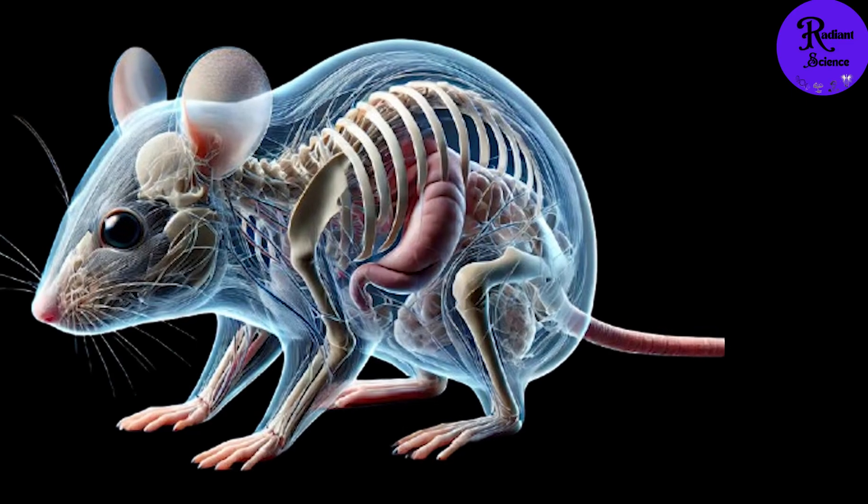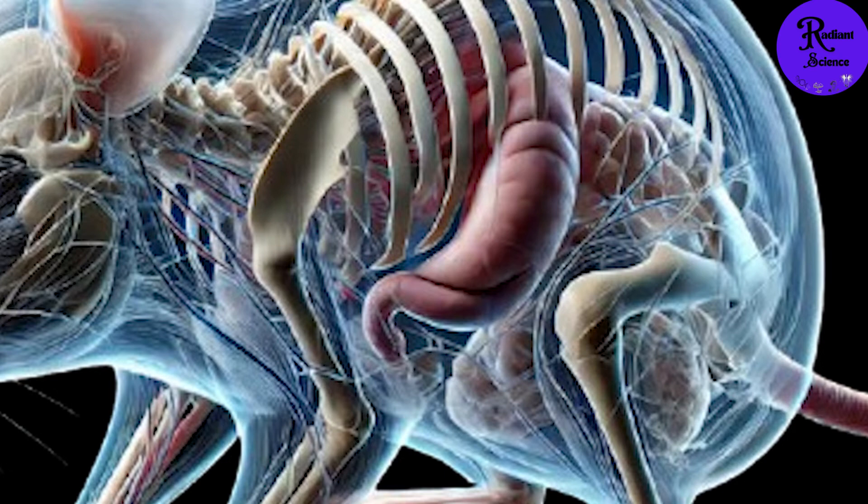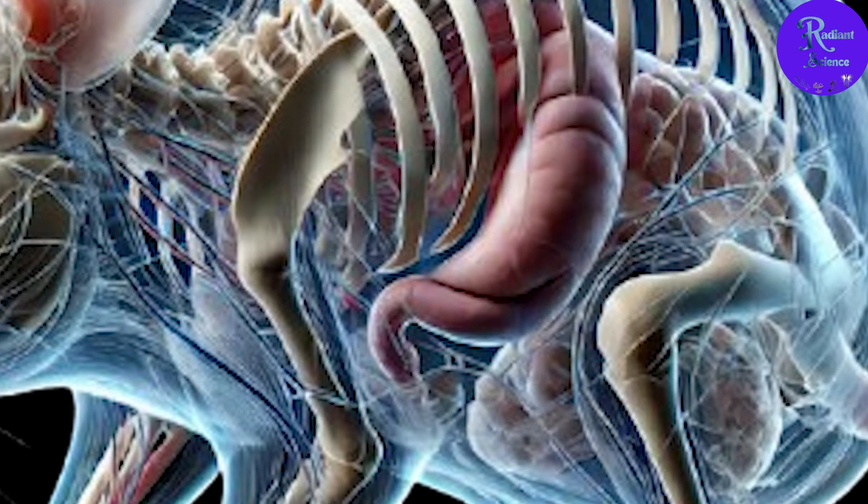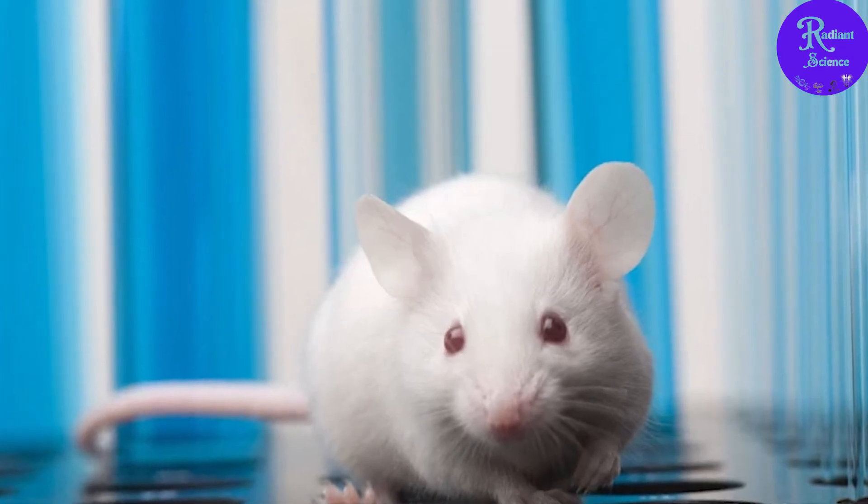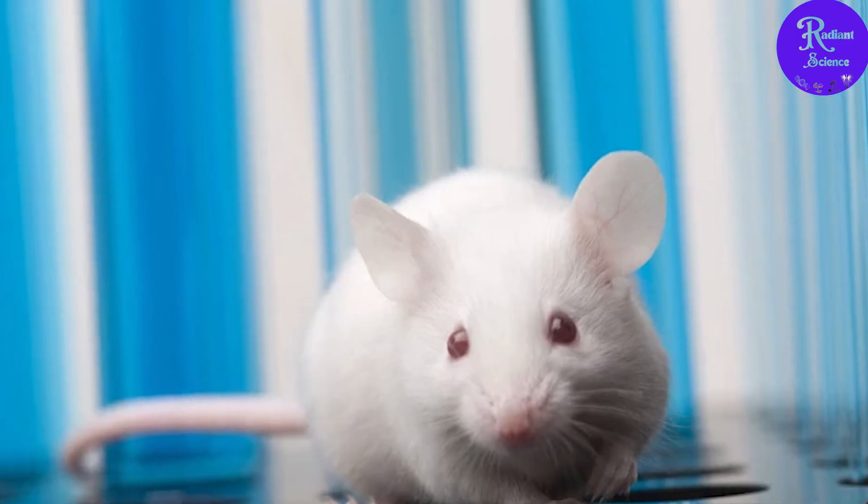This only works for a small depth of about three millimeters, which is enough to see tiny structures like blood vessels and muscles in mice. And don't worry, it's completely reversible. Once the dye is washed off, the mouse's skin turns back to normal. This makes it a safe and non-toxic way to study live animals.